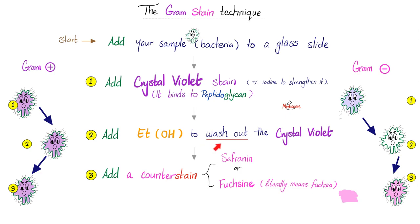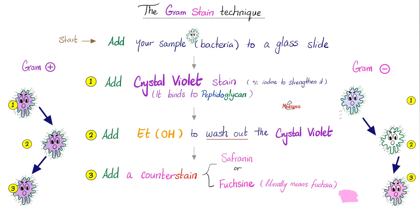Next, you add ethanol to wash out the crystal violet stain. This washes out the gram-negative because it has a thinner cell wall — it cannot retain the crystal violet. But the gram-positive bacteria cannot be washed, because they have a very thick peptidoglycan cell wall layer. Think of it like a thick jacket versus a thin undergarment stained with sauce — the thin garment is much easier to wash. When you add ethanol, it washes the gram-negative but cannot wash the gram-positive.